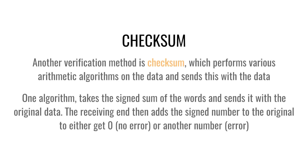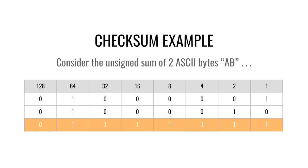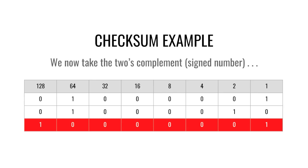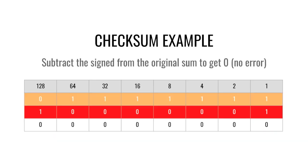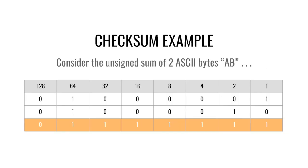Another verification method is checksum. Take two ASCII bytes: A (65) and B (66). We send or store these two bytes, but we add a third byte which is the sum of A and B, giving us 131. We then take the two's complement (the negative version) of 131 by flipping all bits after the first one from the right. We send that along, and 131 plus negative 131 should give us zero. If we get zero, everything is correct. If we don't get zero, we can detect an error in one of the bytes sent.